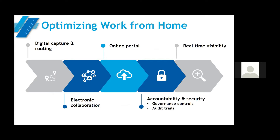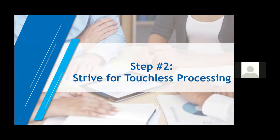What is really needed is a means of optimizing the AP process when working remotely. Many organizations are looking for solutions to optimize their work-from-anywhere environments. An optimized, automated solution would include all the components needed to digitally capture invoice information from either emailed invoices or those entered through the company portal, and route that information throughout the company so that collaboration can take place. This would provide real-time visibility into invoice status and provide accountability and security in the process. The goal is touchless processing through automation.